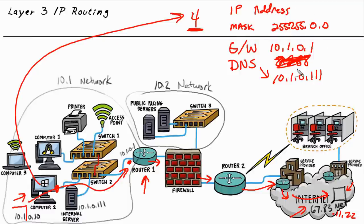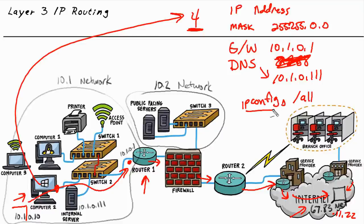So these are the four core pieces of information we would want to verify on Bob's computer if we were troubleshooting. One way of seeing all of that information, plus a little more, at the command line is the command ipconfig /all. That command is applicable on a Windows computer. We could also go to the control panel and view the properties of the network interface card on Bob's computer to see how it is configured.